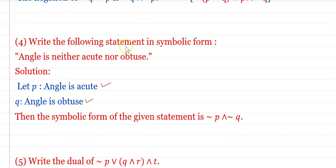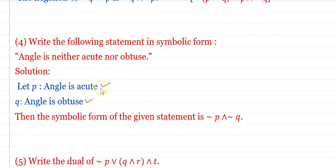Write the following statement in symbolic form: 'The angle is neither acute nor obtuse.' Whenever there is 'neither...nor', we apply conjunction (AND). Let p: the angle is acute, q: the angle is obtuse. Then the symbolic form of the given statement is ¬p ∧ ¬q.